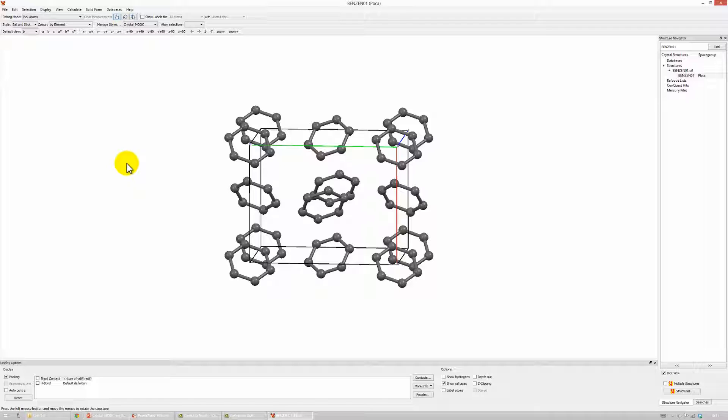Now, here in benzene, we do not have three simple mirror planes, but three glide planes. Let's have a look!